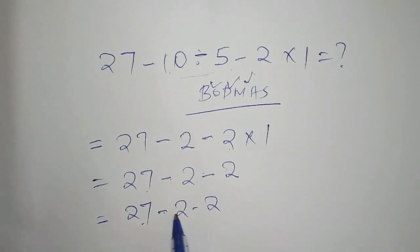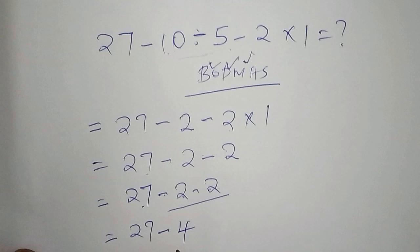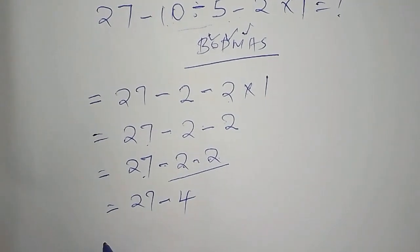When you work out this, we shall have 27 minus 2 minus 2. So these are minus 2 minus 2, we shall say that 27 minus 4.